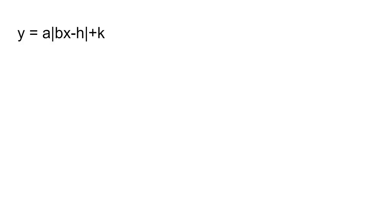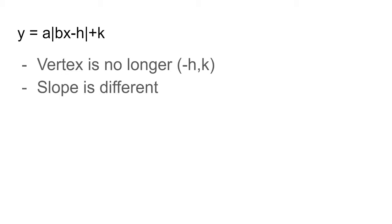But that all changes with the introduction of b. What b does to the graph is that the vertex is no longer negative h, k. K remains the same, but the h is different now. And the slope is different as well.